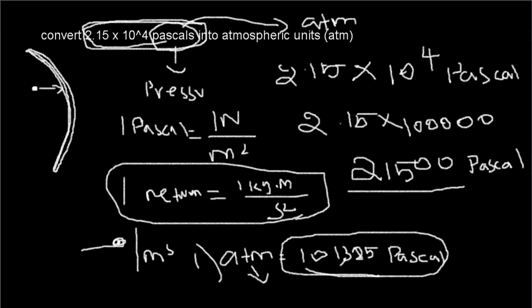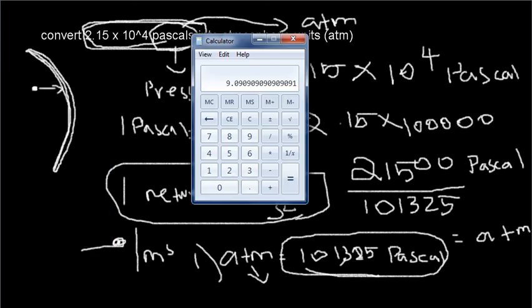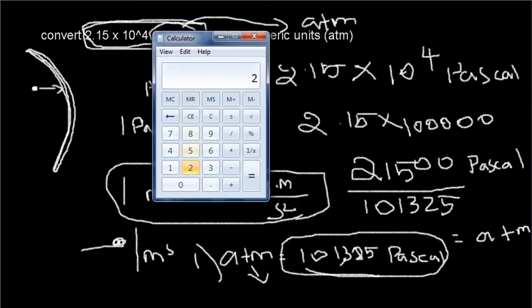21,500 divided by 101,325 gives you the number of atm. Let me bring my calculator. So 21,500 divided by 101,325 gives me...